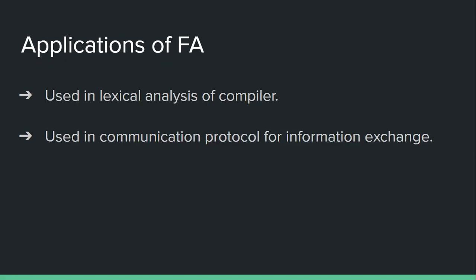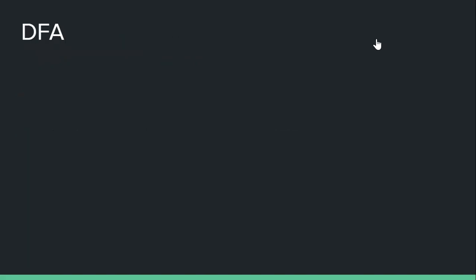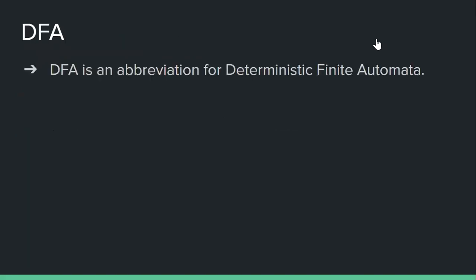Now we'll see what is meant by DFA. DFA is an abbreviation for Deterministic Finite Automata. The word 'automata' specifies that things can be done automatically, while 'finite' specifies a limit — it should be countable so that we can predict or determine the output.